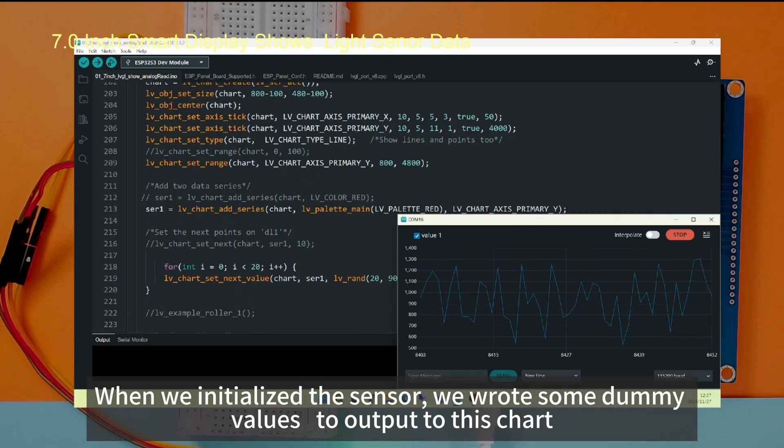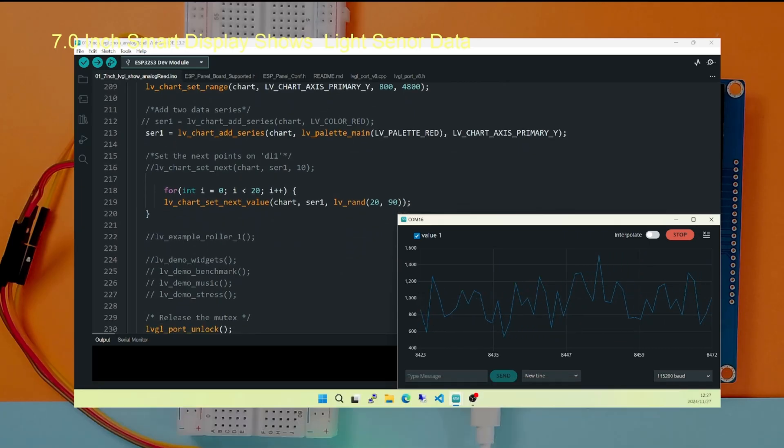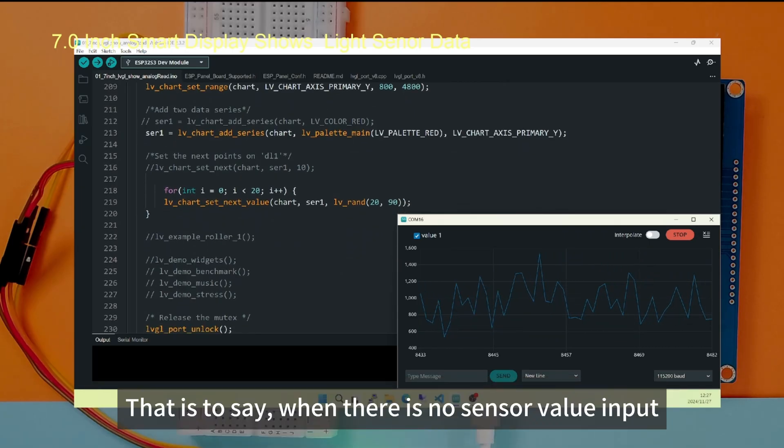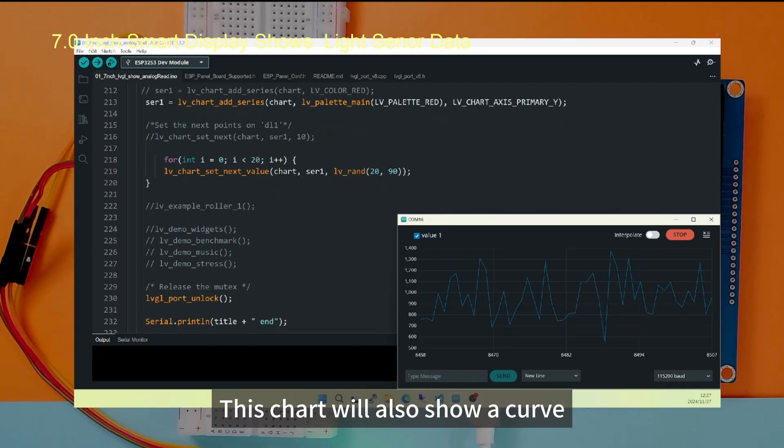When we initialized the sensor, we wrote some dummy values to output to this chart. That is to say, when there is no sensor value input, this chart will also show a curve.